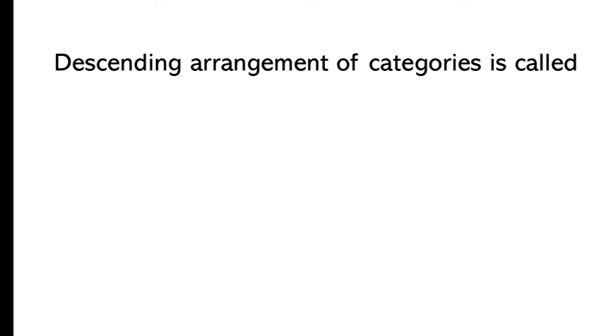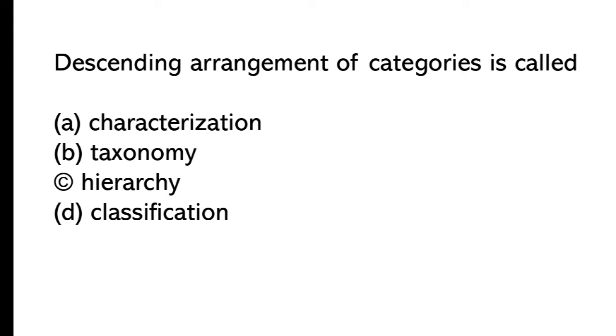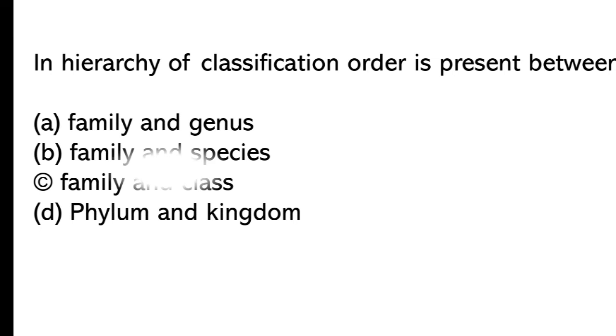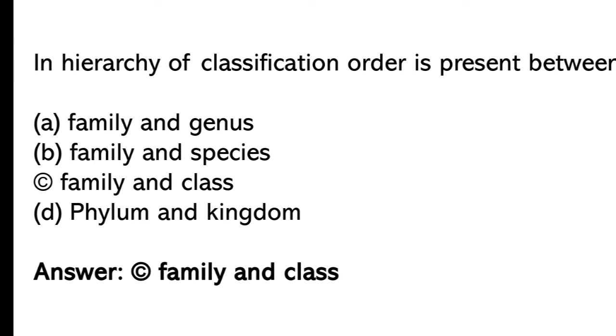Descending arrangement of categories is called: characterization, taxonomy, hierarchy, classification. So the correct answer is option C, Hierarchy. In hierarchy of classification, order is present between: Family and Genus, Family and Species, Family and Class, Phylum and Kingdom. So the correct answer is option C, Family and Class.